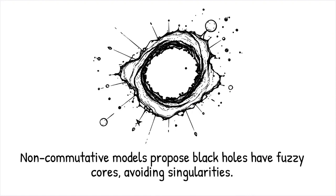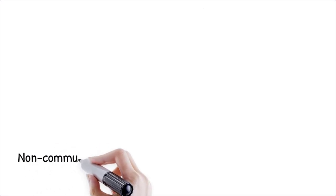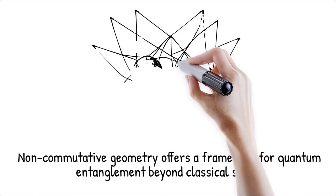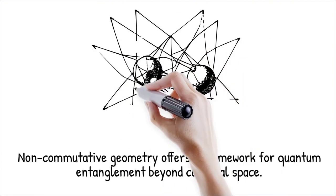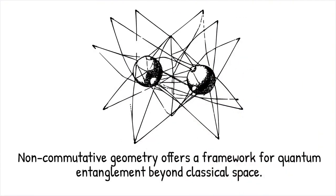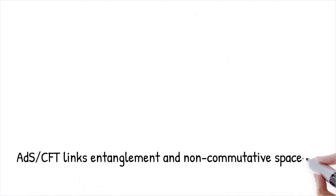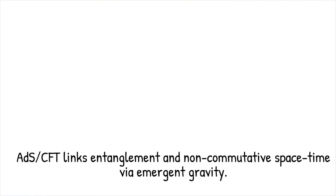Quantum entanglement challenges classical locality, and non-commutative geometry provides a possible mathematical framework to describe these effects. If space itself follows non-commutative principles, then distant entangled particles might be connected by deeper algebraic structures rather than conventional space-time. Certain formulations of the AdS/CFT correspondence suggest that entanglement and non-commutative space-time could be linked through emergent gravitational effects.